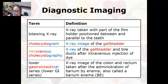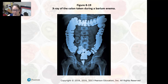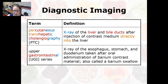Intravenous cholecystography is an X-ray of the gallbladder and bile ducts after an intravenous injection of dye. The lower gastrointestinal series, or lower GI series, are X-ray images of the colon and rectum taken after the administration of barium by enema — that is called a barium enema. Barium is a contrast dye, and these images can reveal, for example, diverticuli or pouches in the colon.